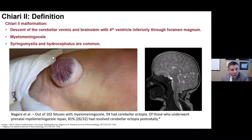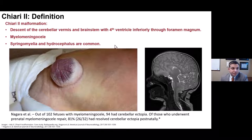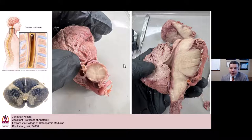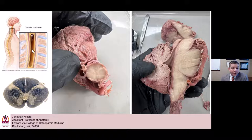Chiari Type II is a more aggressive descent. Types II and III are related to dysraphic conditions — neural tube defects — involving descent of the vermis and even some of the fourth ventricle through the foramen. This is very often associated with myelomeningocele, shown here on a newborn. Syrinx and hydrocephalus are quite common with Chiari II. This myelin-stained C1 section through the cord shows the central canal, which is responsible for syringomyelia development.